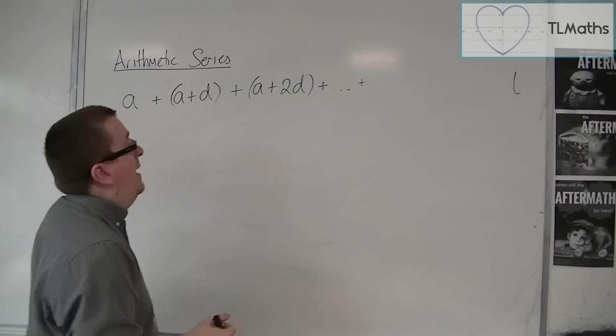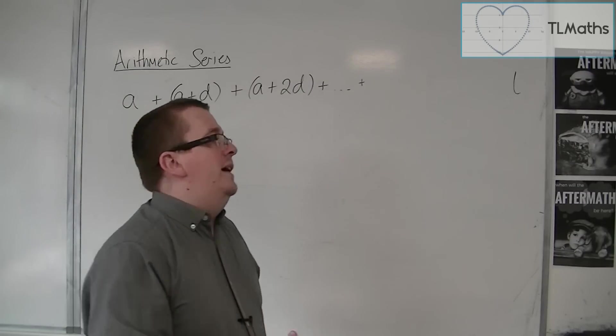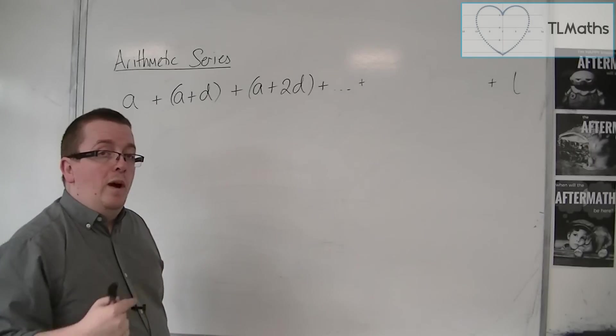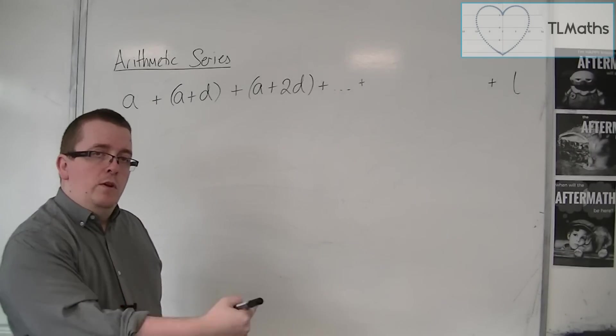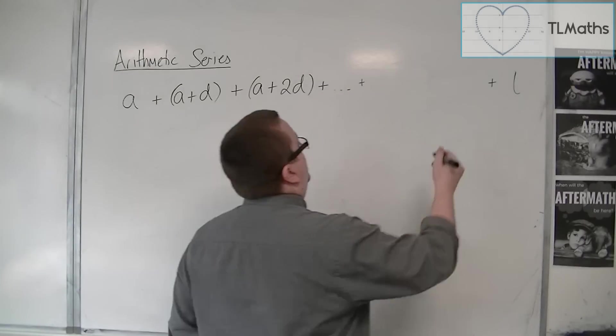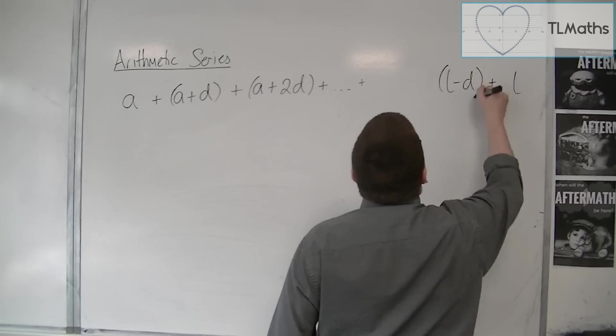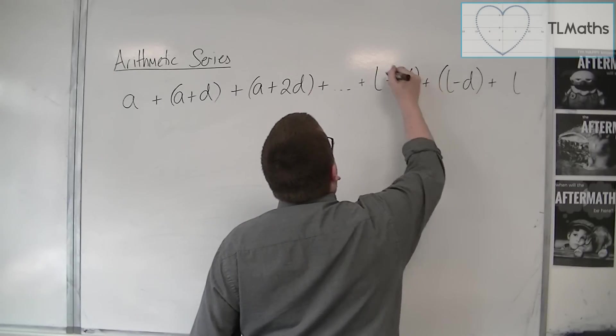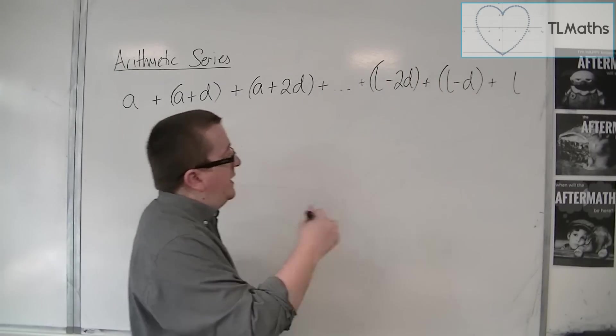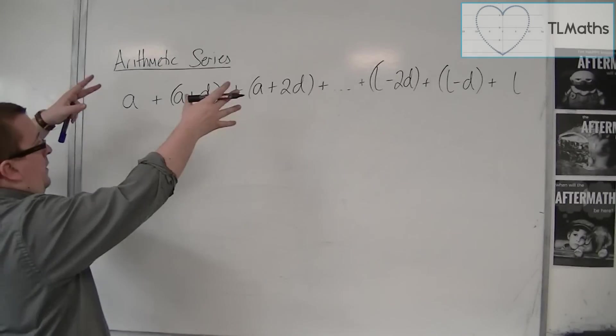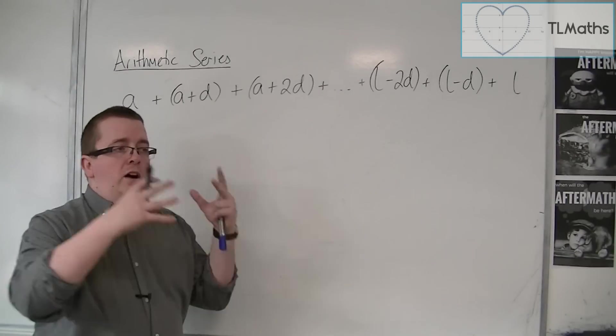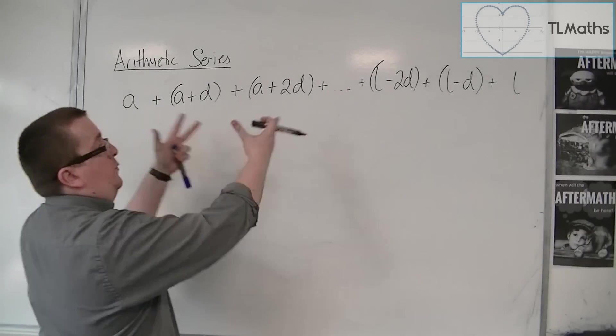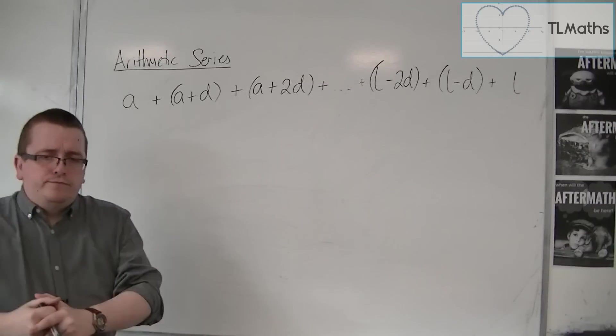Before the last term, we would have had the last term take away the common difference, so one common difference less than the last term would be L minus d. The one before that would have been the last term take away two lots of the common difference, so working backwards. If I'm adding up the first term up to the 50th term, this is what it would look like in general.